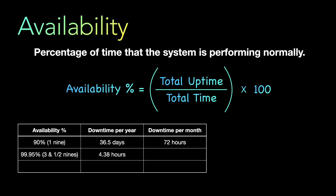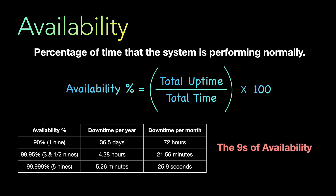If a system is available 99.95% of the time, it is down for 4.38 hours in a year and 21.56 minutes in a month. That's still quite a lot if you're building a huge application with millions of users — almost half an hour of downtime per month. For highly available systems, people consider 'five nines' — 99.999% availability — which corresponds to only 5.26 minutes of downtime in an entire year, and 25.9 seconds per month.